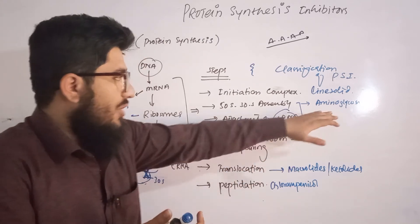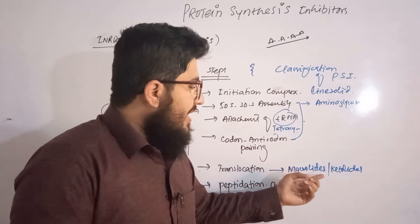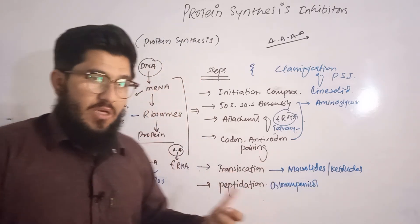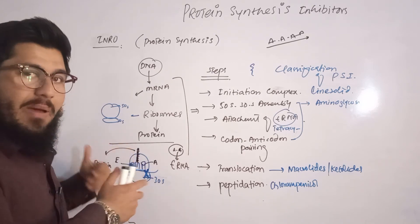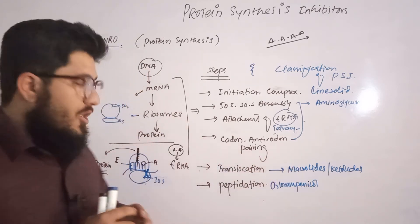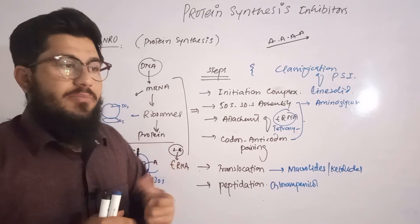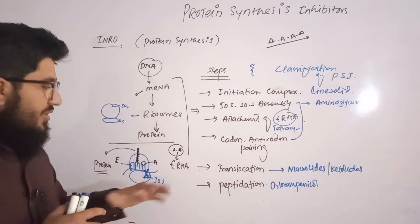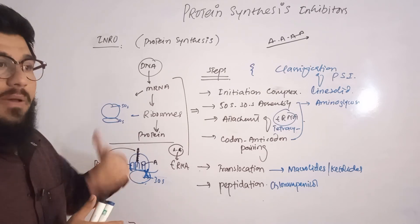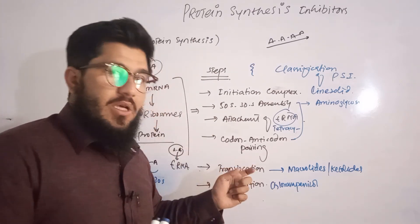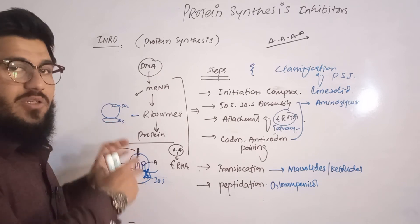Coming to translocation, macrolides and ketolides are responsible for inhibiting translocation — the transfer of tRNA from the A to P to E sites, or equivalently the transfer of the peptide. If translocation is inhibited, further chain elongation cannot occur: no more tRNA can move in to bring additional amino acids, so no peptide, polypeptide, or protein can be formed. In short, macrolides and ketolides inhibit protein synthesis by blocking translocation.